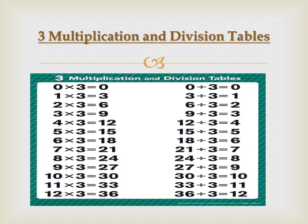Now read the table with me: 1 3s are 3, 2 3s are 6, 3 3s are 9, 4 3s are 12, 5 3s are 15, 6 3s are 18, 7 3s are 21, 8 3s are 24, 9 3s are 27, 10 3s are 30.